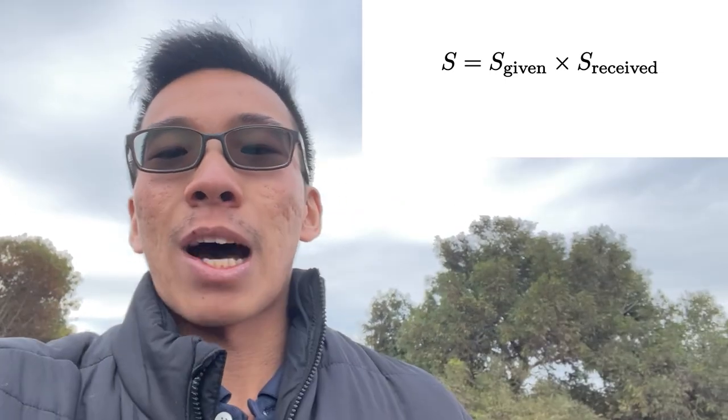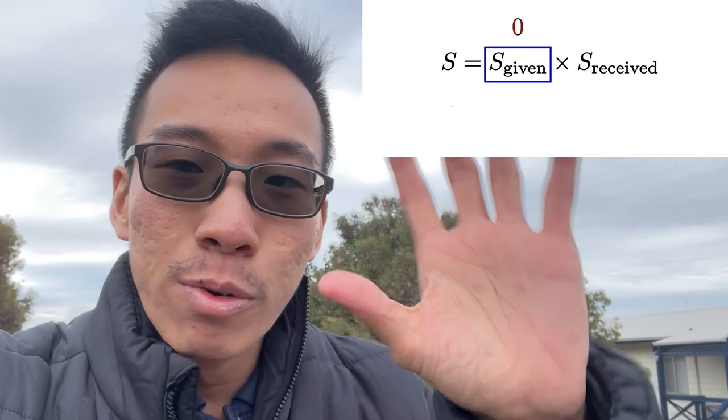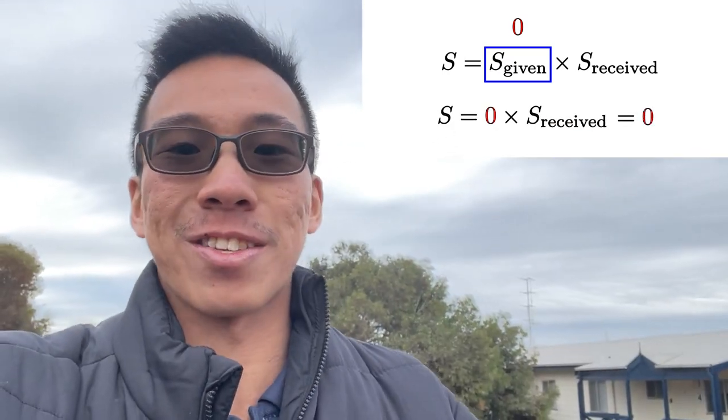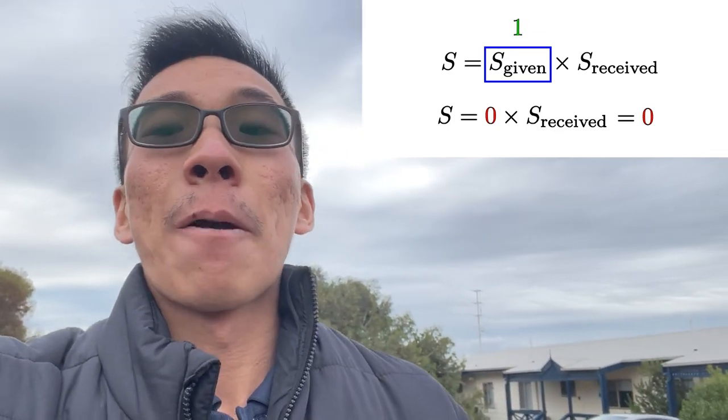Now what's interesting about this formula is how you can actually use this formula to improve in your own friendships. For instance, you could either give space of vulnerability or hold it back. Now if you hold back that space of vulnerability, then the mutual space for vulnerability automatically equals 0 because 0 times anything is just 0. However, if you do give space for vulnerability, the outcome could either be 1 or 0.